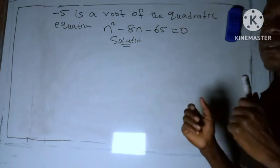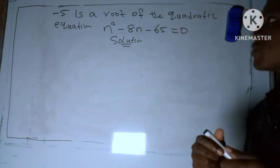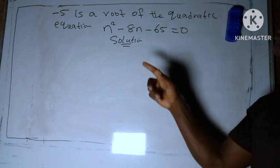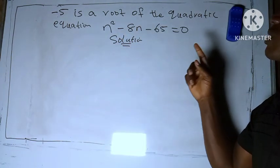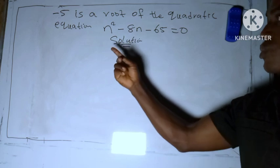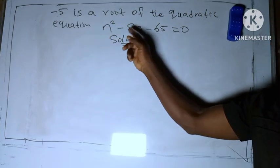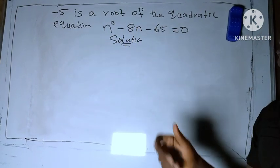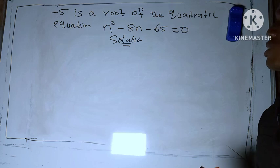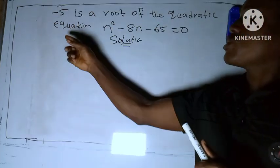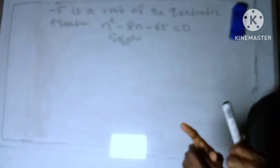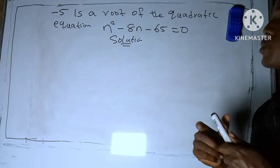Welcome back to my channel. This is another calculation under quadratic equations. It says -5 is the root of the quadratic equation n² - 8n - 65 = 0. They have given us one root, so we are asked to find the next root.